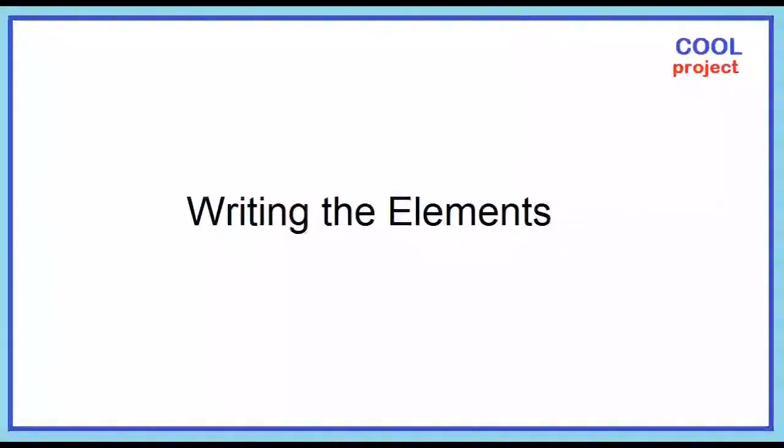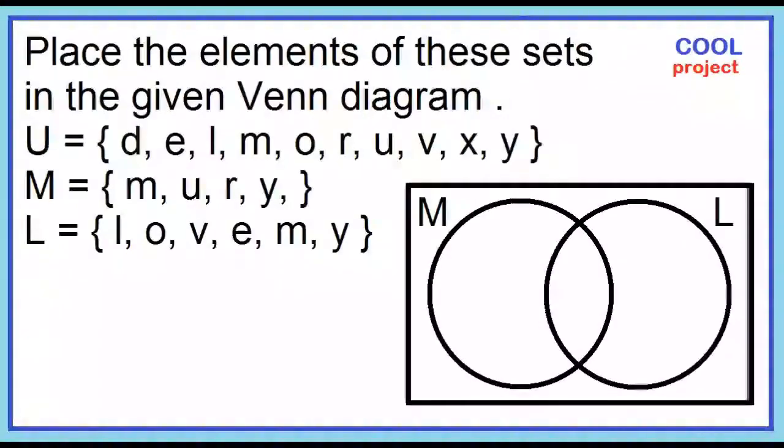Writing the elements. Place the elements of these sets in the given Venn diagram. First, identify the elements common to set M and set L. The elements common to M and L are letter M and letter Y. Place these elements in the area where M and L overlap.